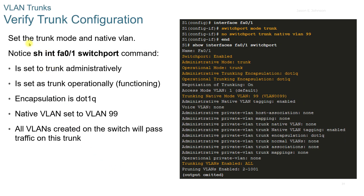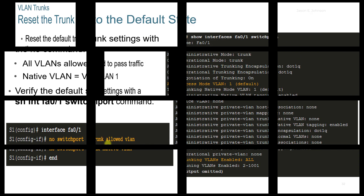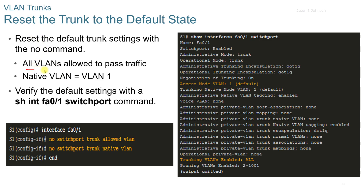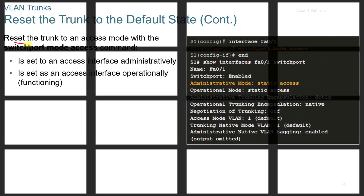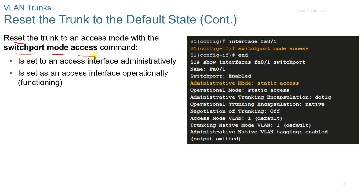To verify trunk configuration, use the show interface FA0/1 switchport command. The interface should show administratively set to trunk and operationally functioning as trunk. Encapsulation is 802.1Q, and the native VLAN is set to VLAN 99. All VLANs created on the switch will pass traffic on this trunk. You can also reset the trunk to the default state, where all VLANs are allowed and the native VLAN returns to VLAN 1. Reset the trunk to access mode with the switchport mode access command.